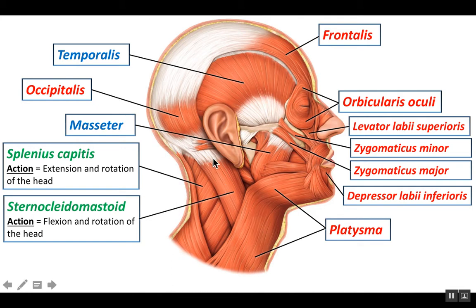The sternocleidomastoid is going to pull that mastoid process downward more anteriorly. And when both your sternocleidomastoid muscles do that, you look down at your toes. When you look down at your toes, we call that flexion — flexing your head and neck. So for that reason, these muscles are antagonistic. One helps you look up; the other helps you look down.